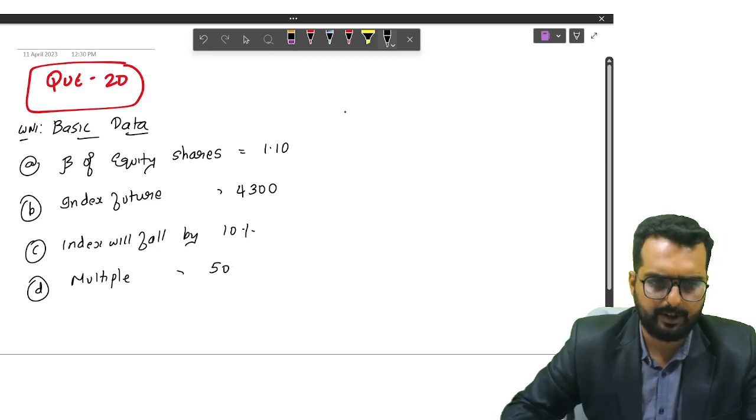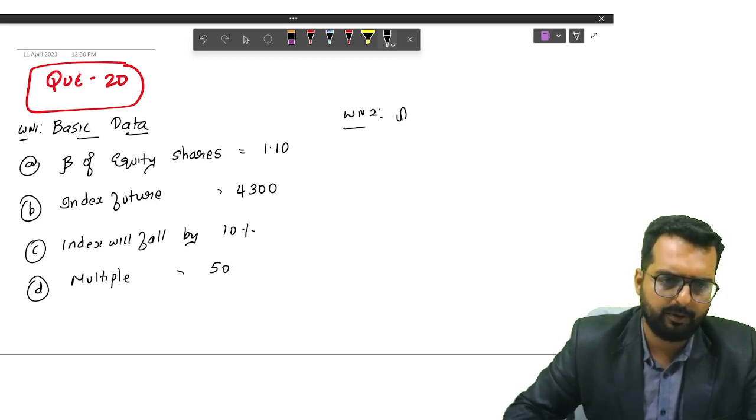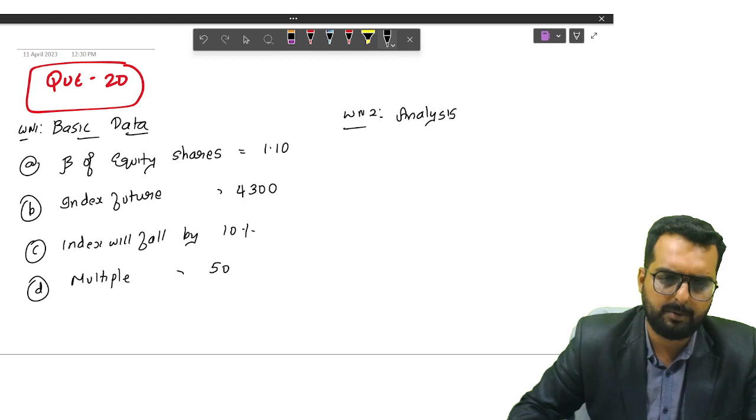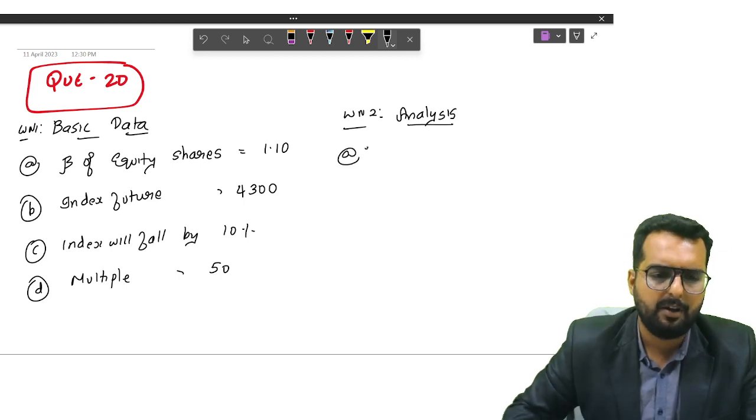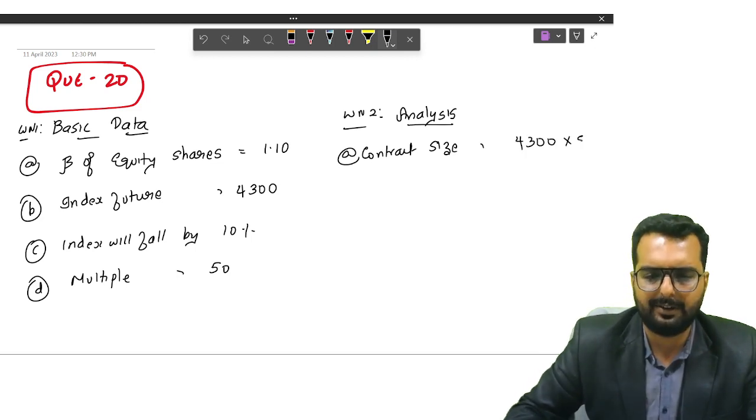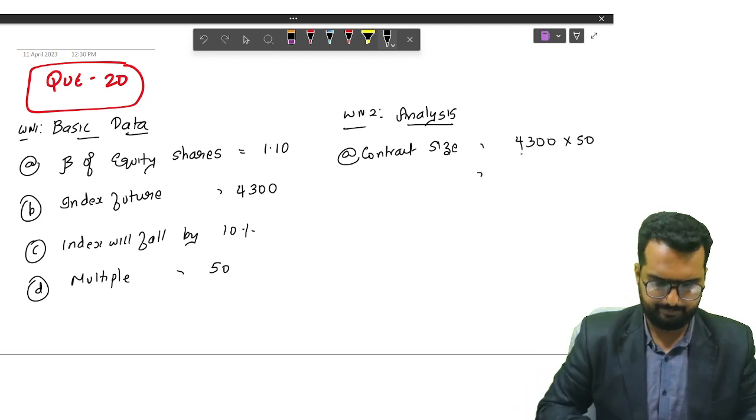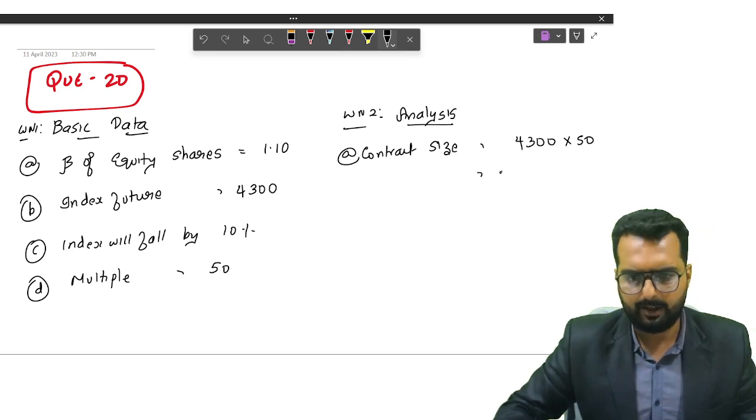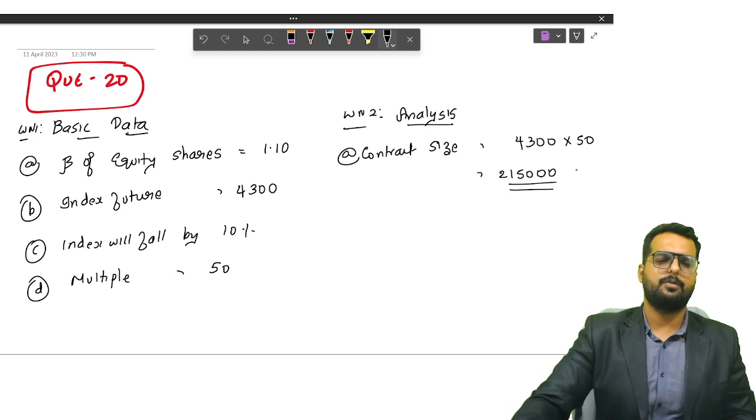Friends, if multiple is 50, from this I can find out some hidden information. Working note number 2: Analysis. First, I can find out the contract size. What will be the contract size? 4,300 into 50. Do you get the answer as 2,15,000? First thing that we can find out.